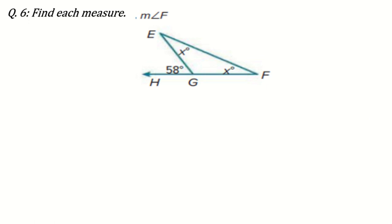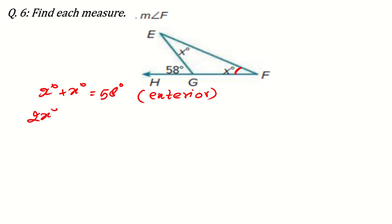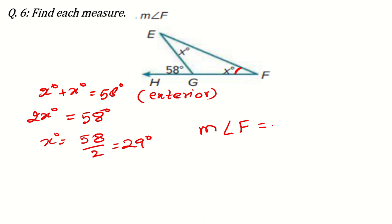The next question: find the measure of angle F. Using the exterior angle property, x plus x equals 58 degrees, so 2x equals 58, and x equals 29 degrees. Therefore the measure of angle F is 29 degrees.